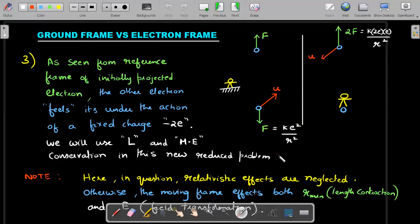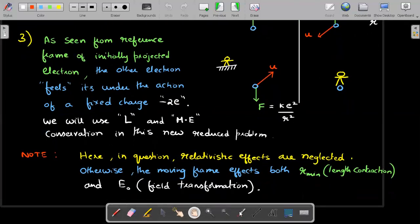As seen from the reference of the initially projected electron, the other electron feels it's under the action of a fixed charge of -2e. From this reference, I will use angular momentum and mechanical energy conservation in the new reduced problem.